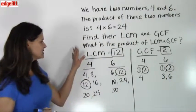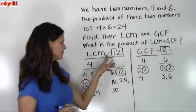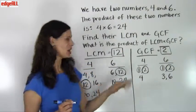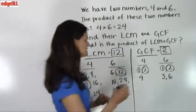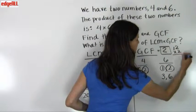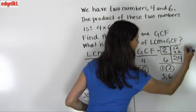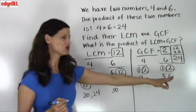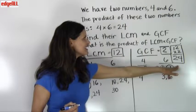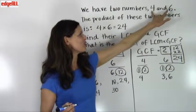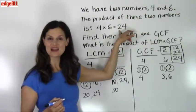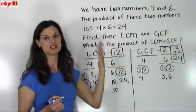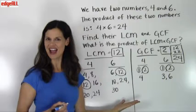Now what happens when we find the product of the least common multiple times the greatest common factor? The least common multiple is 12, and the greatest common factor is 2, so 12 times 2 equals 24. And the interesting thing here is that 24 is the same as when we take those two numbers, 4 and 6, and multiply them together. So the product of two numbers is equal to the product of their least common multiple and their greatest common factor.